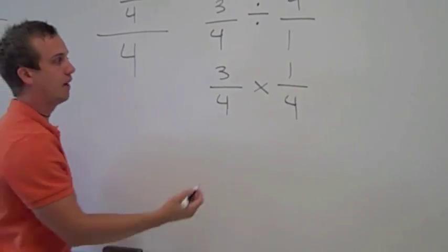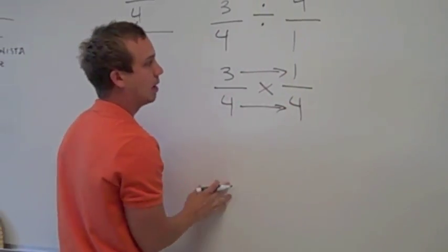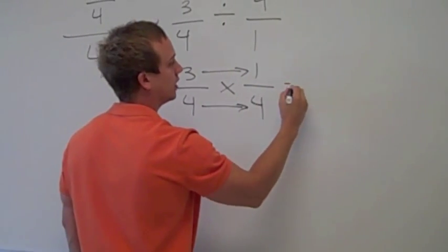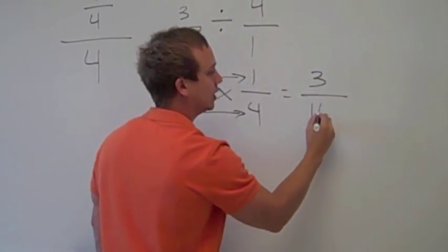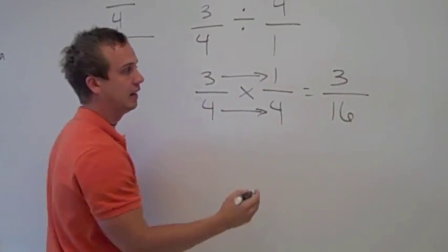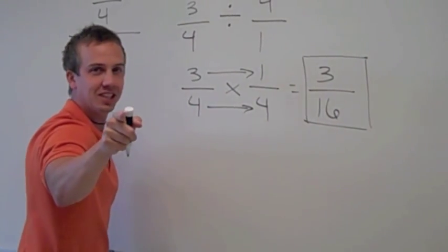When multiplying fractions, you multiply across the numerator, and you multiply across the denominator. 3 times 1 is equal to 3. 4 times 4 is equal to 16. That cannot be simplified any farther. So that is your final answer. Take it away, Mrs. Tiller.